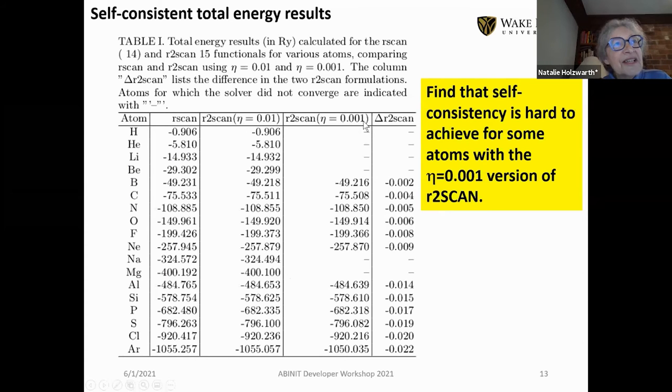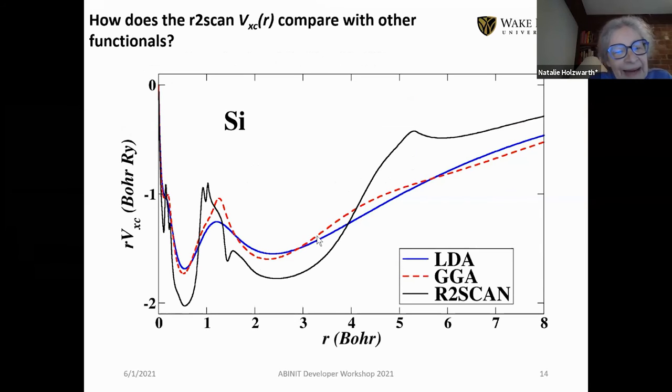This is a summary of some results from our calculations. These empty spaces show that for eta equal to 0.001, we're still unable to converge the calculation for certain atoms. But for eta equal to 0.01, it seems to work for most we've tried so far.